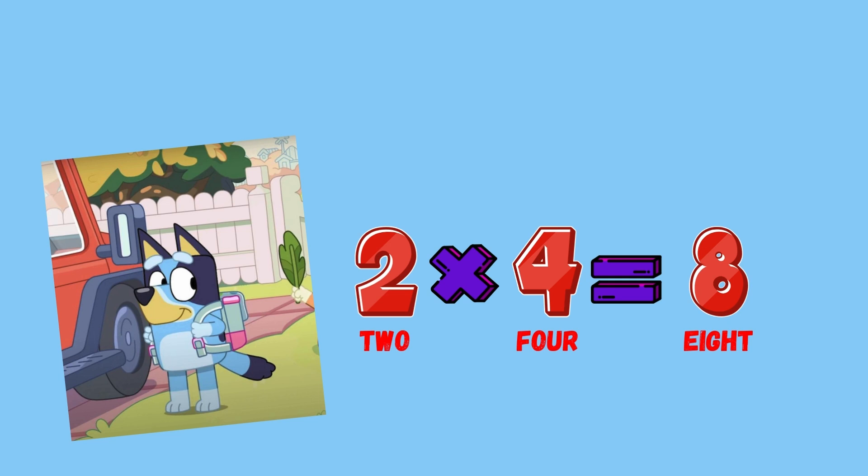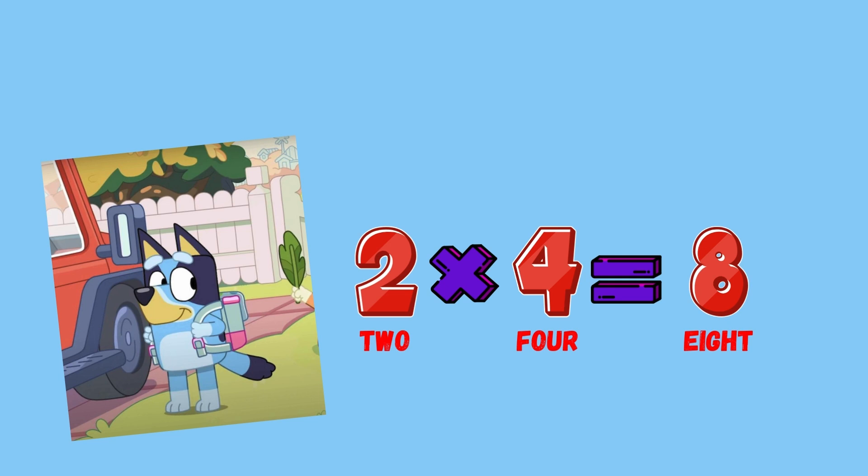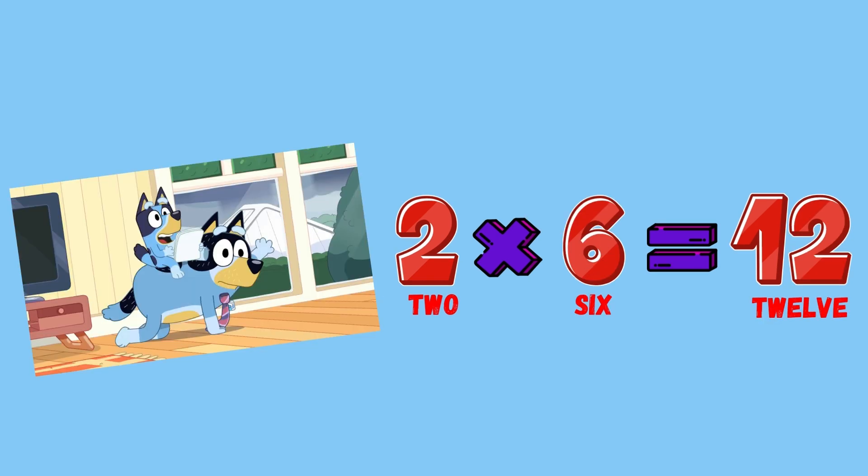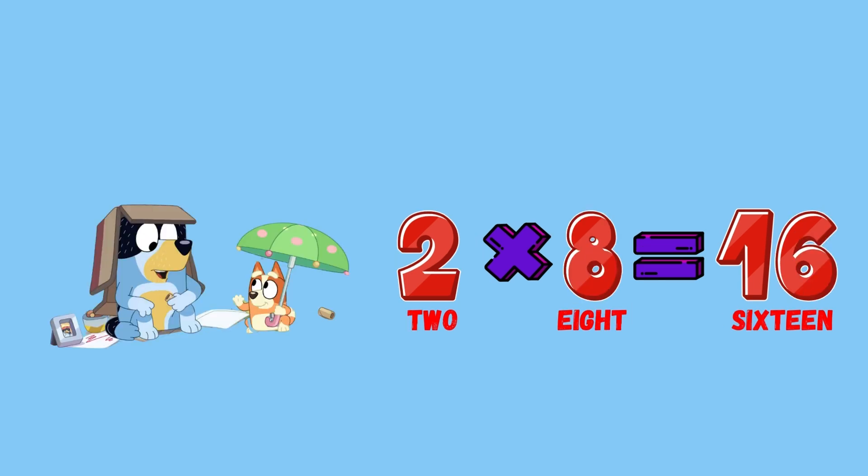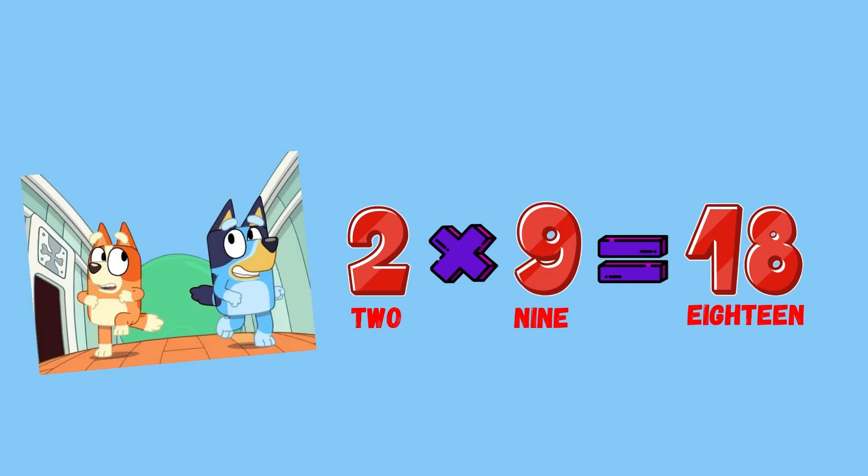Two times four equals eight. Two times five equals ten. Two times six equals twelve. Two times seven equals fourteen. Two times eight equals sixteen. Two times nine equals eighteen.